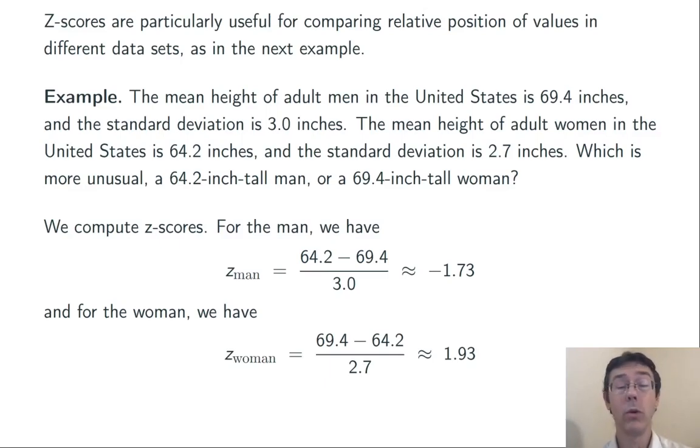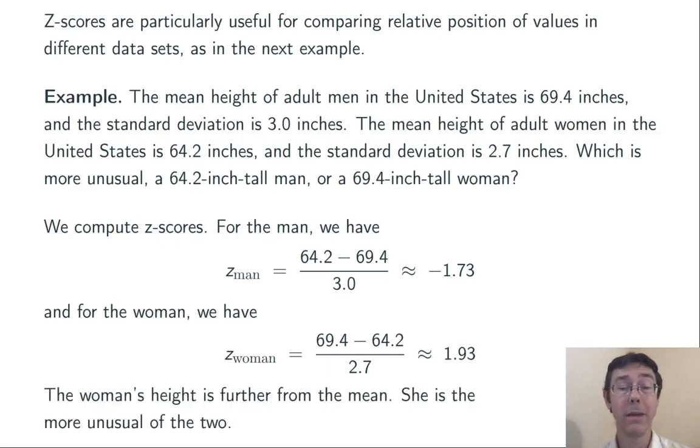So in absolute value, the z-score for the woman is greater than the z-score for the man, so she's more unusual. Her height is further from average, relatively speaking. By the way, notice that we've made that decision despite the fact that the two of them are the same amount from the average, namely 5.2 inches.